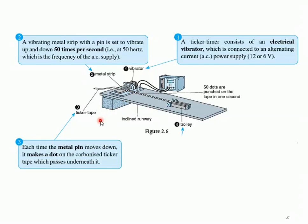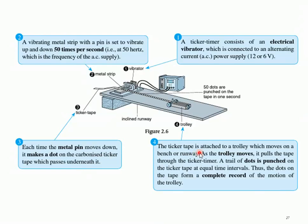Third is the Ticker Tape. Ticker tape is actually just a piece of paper with one side that is carbonized. Each time the metal pin moves down, it makes a dot on the carbonized Ticker Tape which passes underneath it. And finally, the Trolley. A Ticker Tape is attached to a trolley which moves on a bench, runway, or trolley track. As the trolley moves, it pulls the Ticker Tape through the Ticker Timer. A trail of dots is punched on the Ticker Tape at equal time intervals. Therefore, the dots on the tape form a complete record of motion of the trolley.